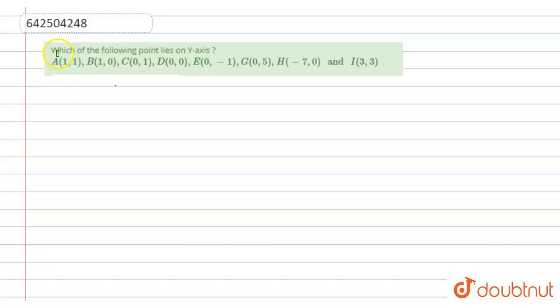Hello friends, let's see this question. The question says, which of the following point lies on the y-axis? The first point is A with coordinates (1,1), second is B (1,0), C (0,1), D (0,0), E (0,-1), G (0,5), H (-7,0), and the last is I with coordinates (3,3).